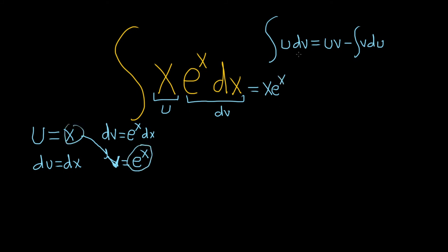Always write the formula down, very useful. Minus the integral of vdu. So it's v times du. So the integral of e to the x. And then du is just dx.